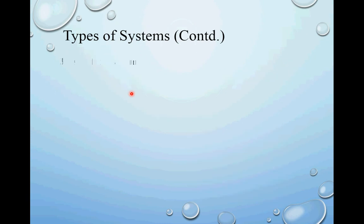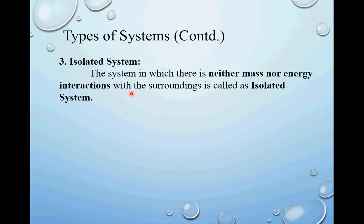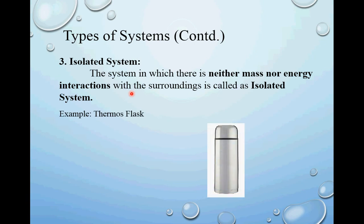The third type is an isolated system. The system in which there is neither mass nor energy interaction with the surroundings is called an isolated system. Example: a thermos flask. Consider you have a thermos flask with coffee stored at 70 degrees Celsius — greater than the surrounding temperature. You are not heating the flask, so there is no energy interaction. It is not an open container, so there is no evaporation and no mass interaction. This type of system is called an isolated system.